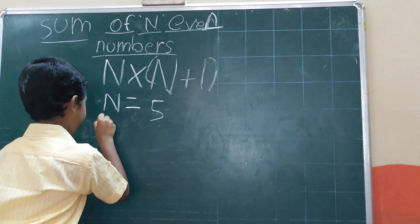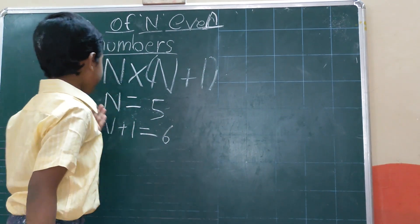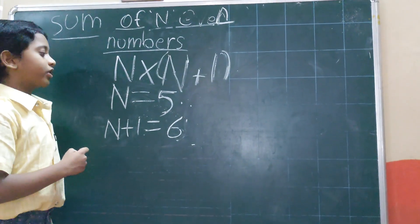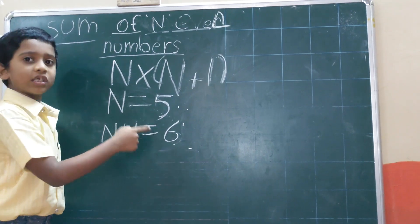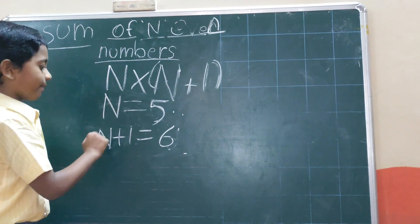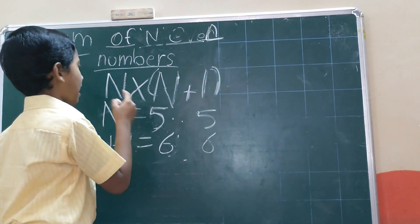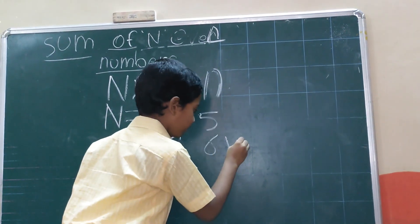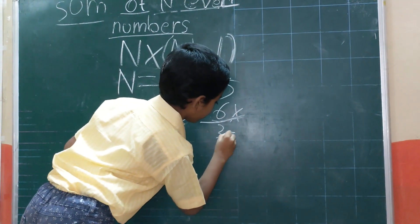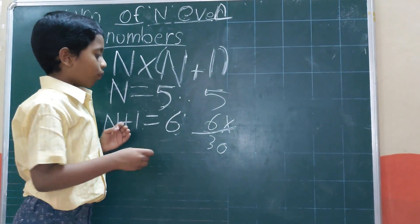Then n plus 1 is equal to 6. We have to keep these two numbers into the formula. n is equal to 5, n plus 1 is equal to 6. And multiply them. 5 times 6 is 30. That is summation of even numbers 1 to 10.